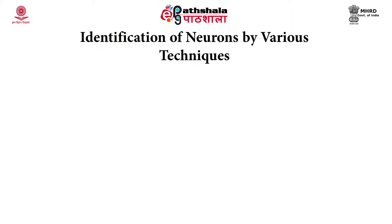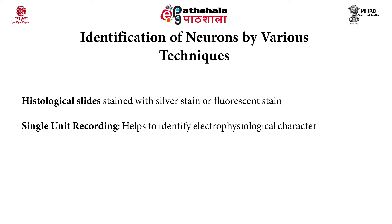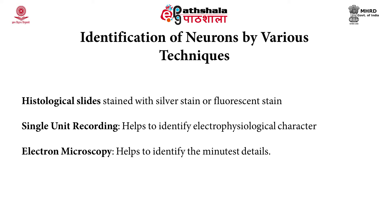There are different techniques used to study these neurons. Histology using fluorescent stains is one method. Single unit recordings where the electrophysiology and firing rates of the neuron are recorded help scientists classify neurons into different kinds. Electron microscopy has also provided a lot of detail about the structures present in neurons.